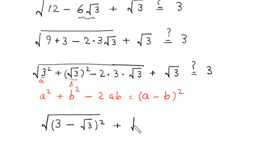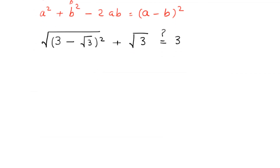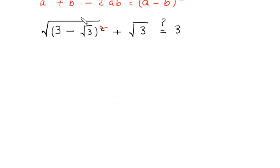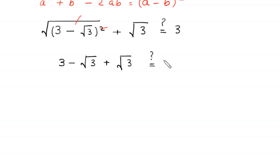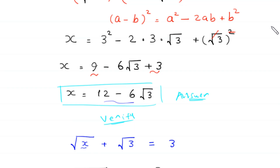The square cancels with the square root, leaving 3 minus root 3. Adding root 3 gives us: 3 minus root 3 plus root 3 equals 3. The positive root 3 and negative root 3 cancel, so we are left with 3 equals 3. The left-hand side equals the right-hand side, confirming that x equals 12 minus 6 times root 3 is a valid solution.